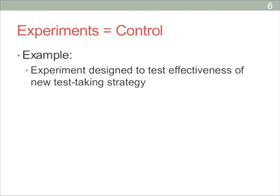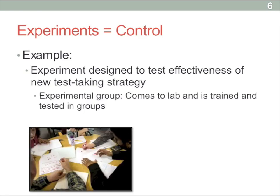Here's a little example — an experiment that is missing a strong element of control. Try to spot the area where it really lacks control. Let's say the experiment is attempting to test out some new type of test-taking strategy that takes place in groups, to see the effectiveness of that on how people score on tests. With the experimental group, you have them come into a lab and train in this new test-taking strategy in groups.